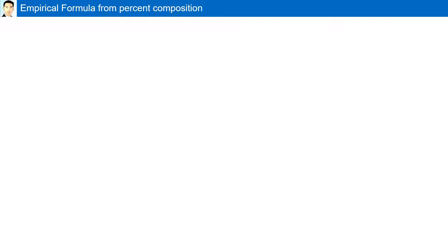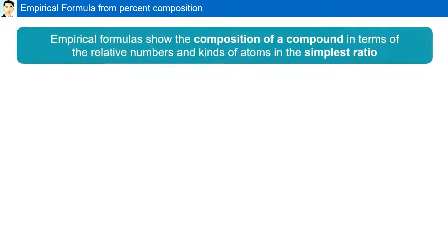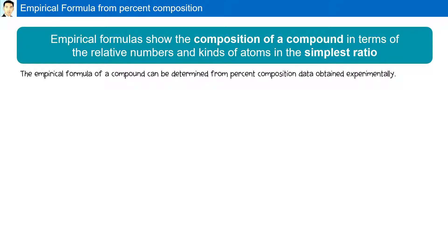Empirical formulas show the composition of a compound in terms of the relative numbers and kinds of atoms in the simplest ratio. The empirical formula of a compound can be determined from percent composition data obtained experimentally.